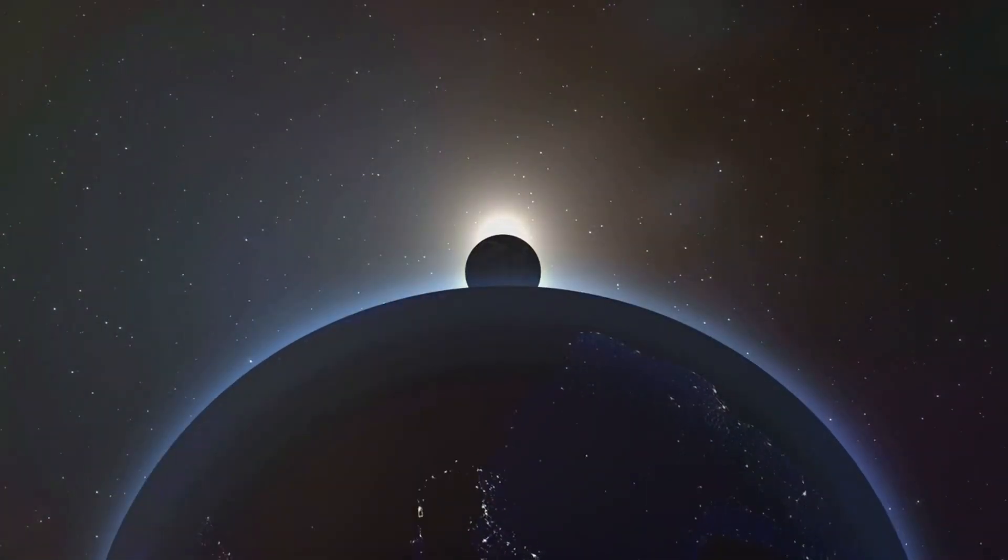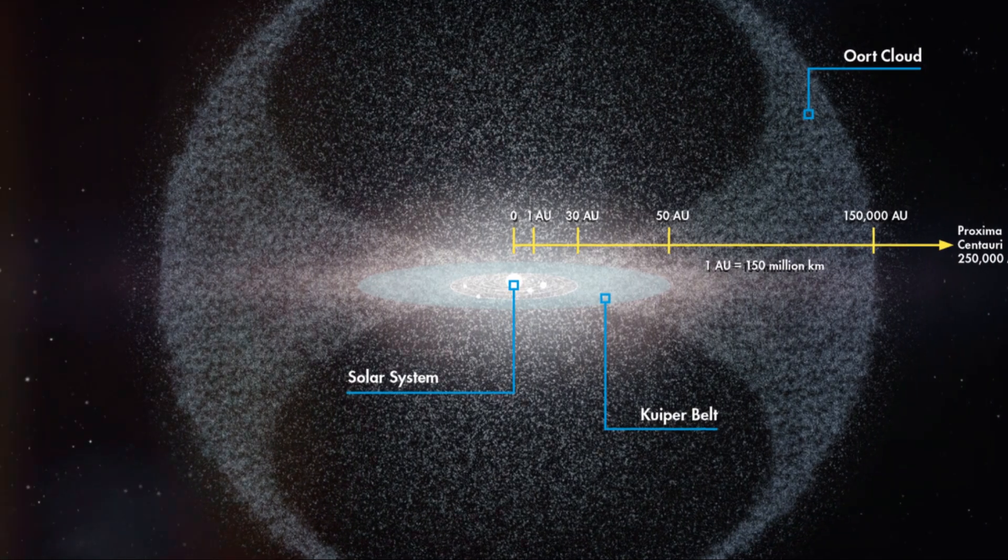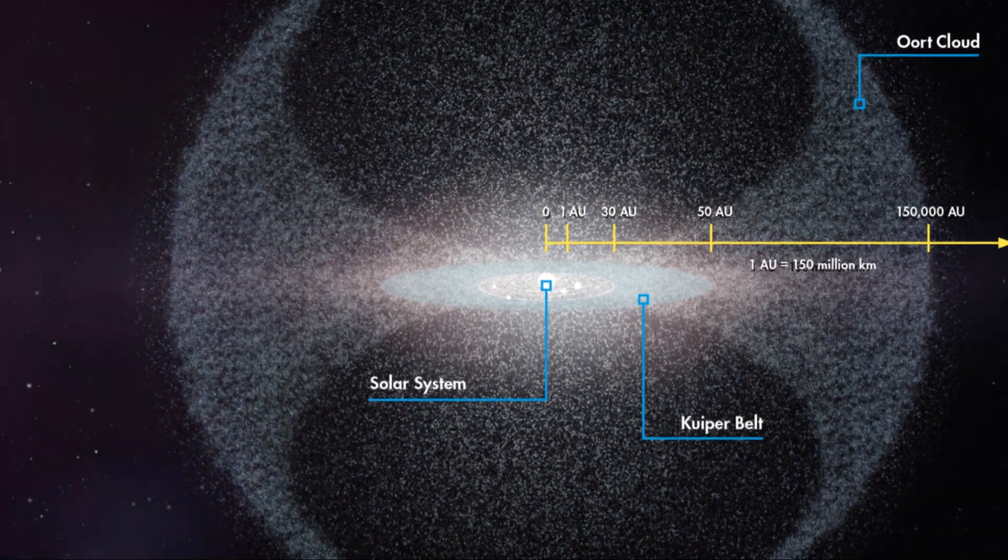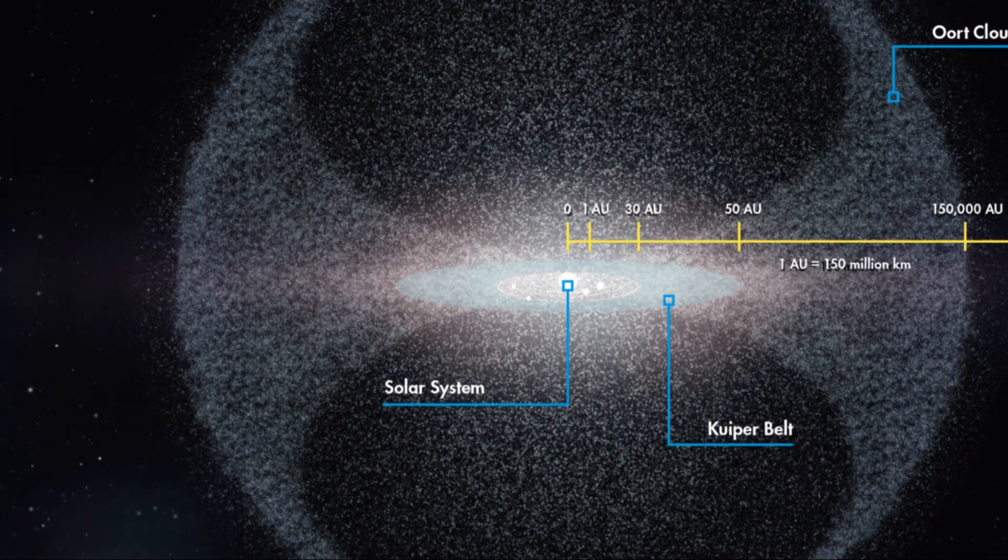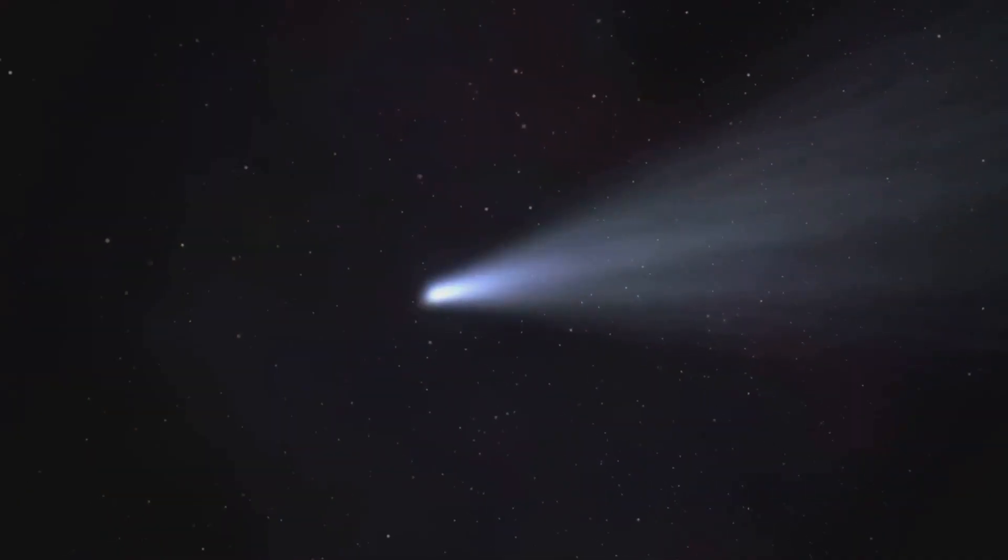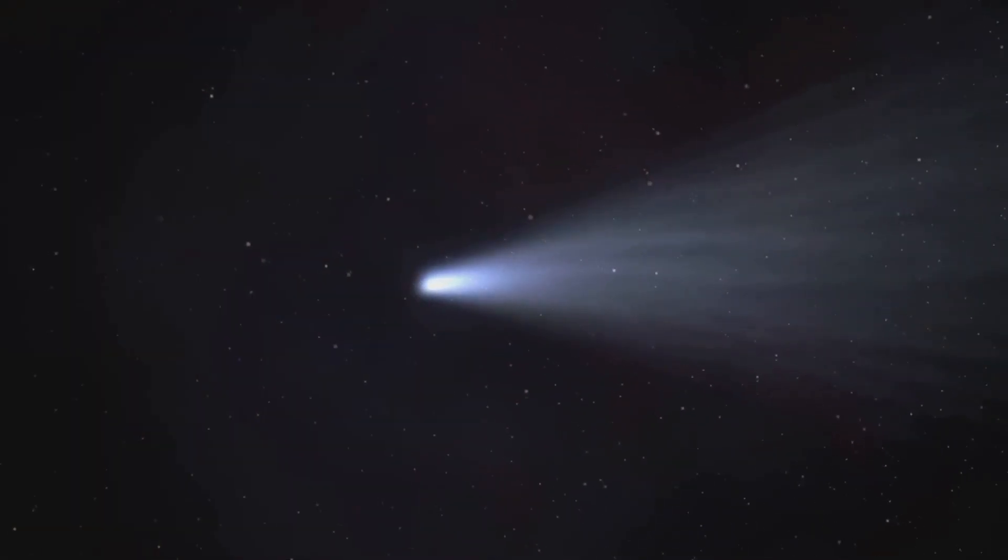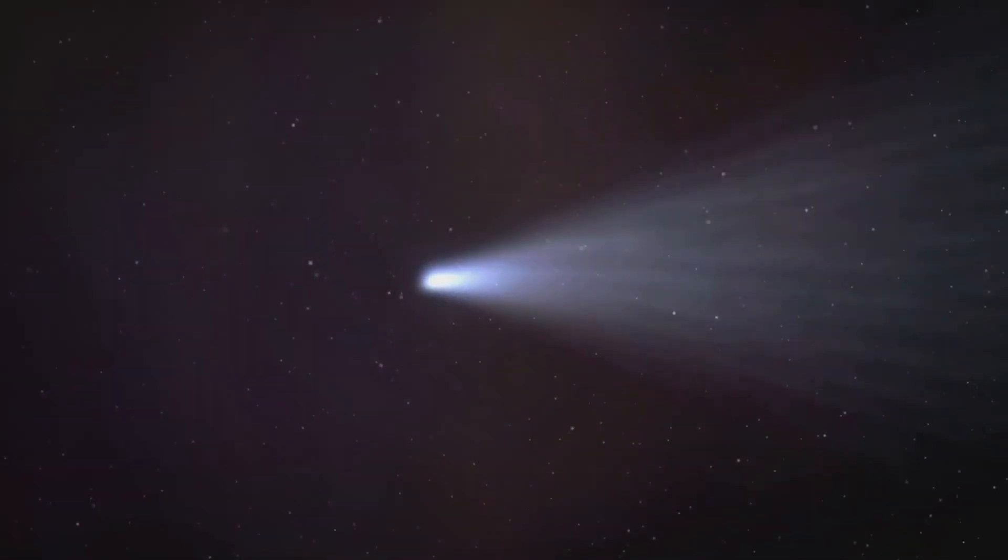The Oort cloud, a vast icy halo surrounding our solar system, is a testament to the dynamic and chaotic forces that shaped our cosmic neighborhood. This distant realm of icy wanderers, remnants from the solar system's formation, serves as a reservoir for long-period comets, sending these icy messengers from the solar system's edge, hurtling toward the sun.